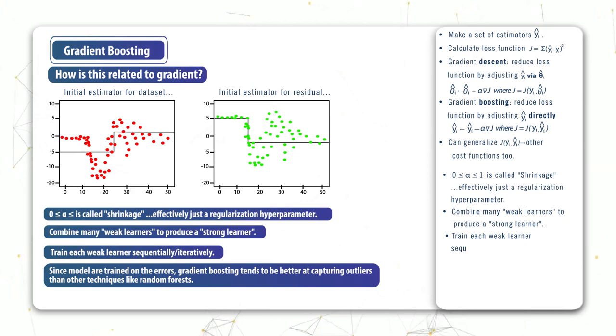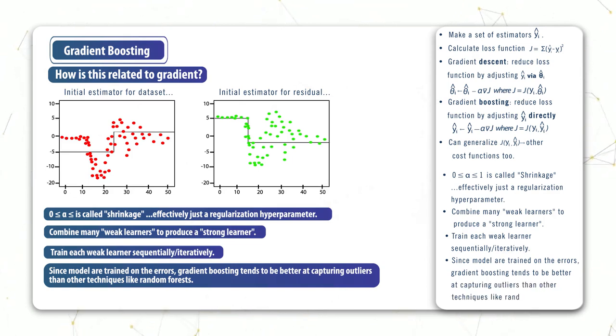So the models are trained sequentially. And since they're being trained on the errors, they're better at outlier detection problems or imbalanced datasets. And again, that's just because in this iterative boosting process, it's really honing in on those specific errors.